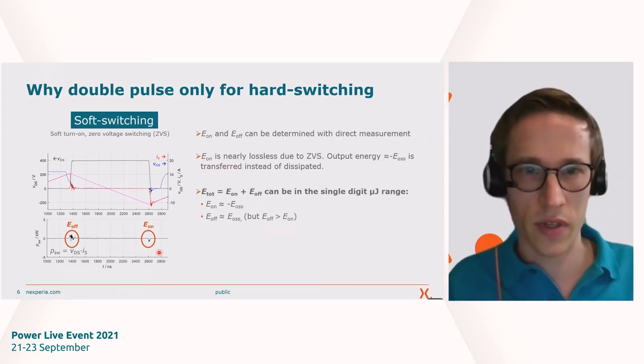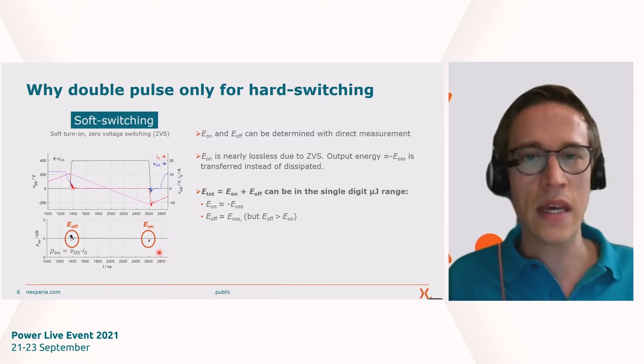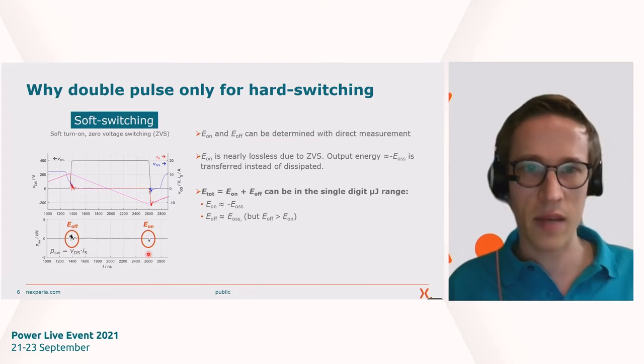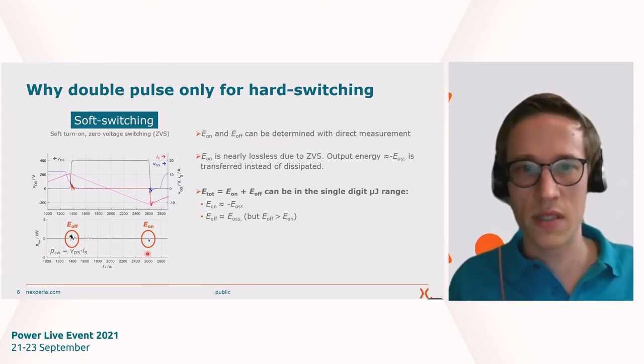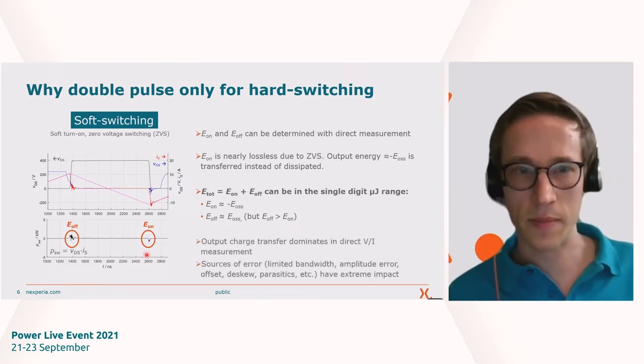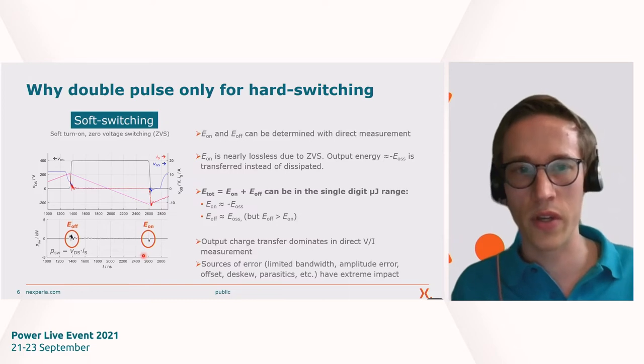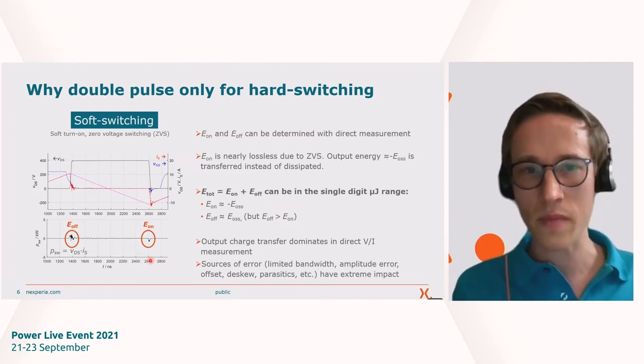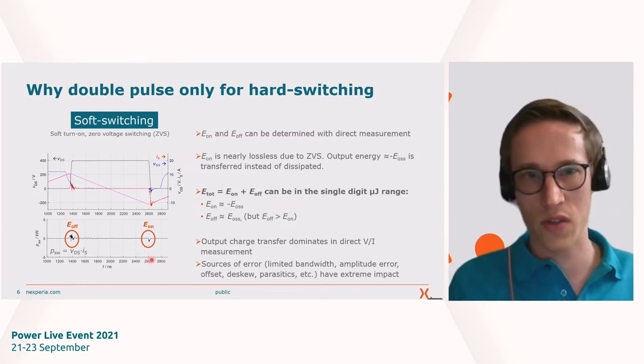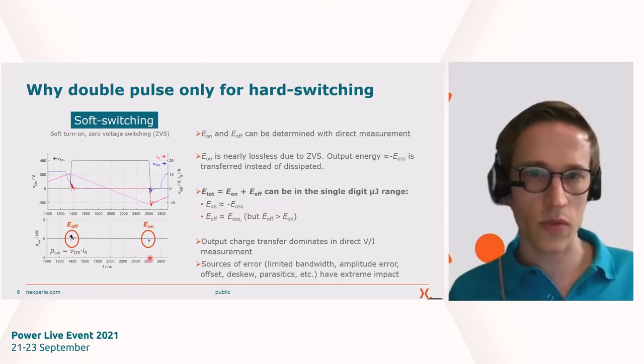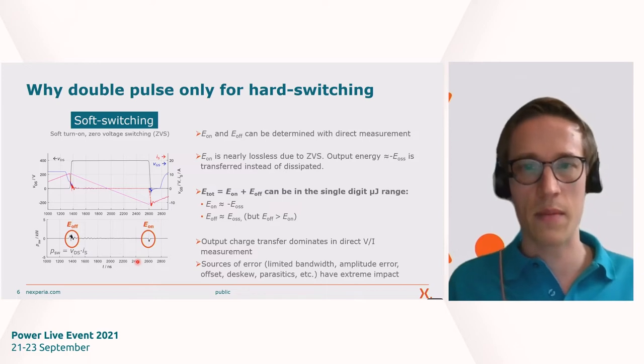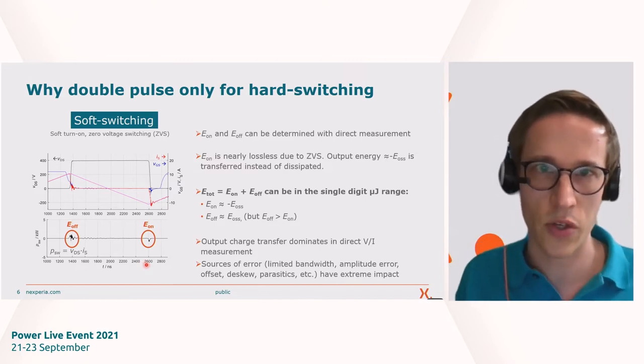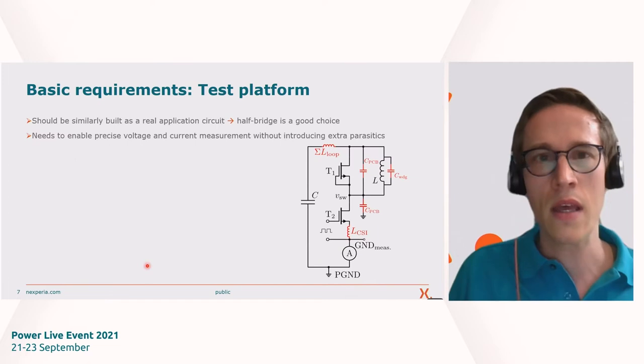Now if we do that for the soft switching analysis, you can see E-off and E-on can be measured again. But since E-on now is nearly lossless due to zero-voltage switching, which is usually what we mean when we talk about soft switching, the output energy is simply transferred instead of dissipated. When we do the same calculation for the total energy and add both values, since there is a different sign on both, we will get to a very low value. Since most of these measurements is just due to non-dissipative charge transfer, and only a small loss component is hidden in between, it's very hard to really extract this small loss component. Therefore, any source of error like deskew, parasitics in the setup, limited bandwidth, or amplitude error and offset has a very big impact on the result. Therefore, double-pulse analysis is not really useful for soft switching analysis.